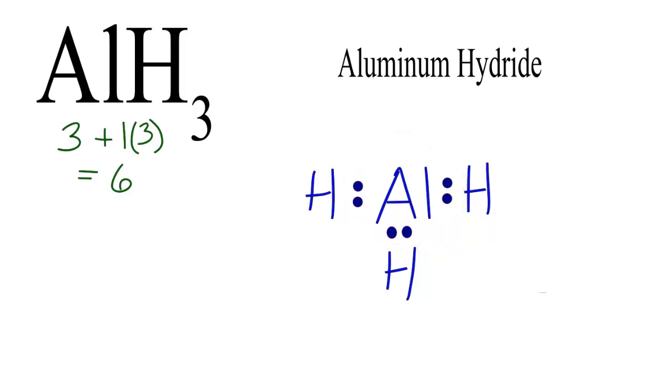You can calculate the formal charges for each atom in this Lewis structure, and you will see that the charges are zero, meaning that this is the most likely Lewis structure for AlH3. This is Dr. B, and thanks for watching.